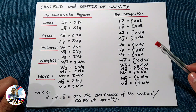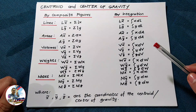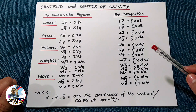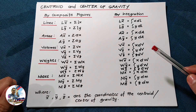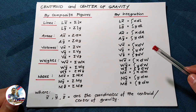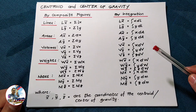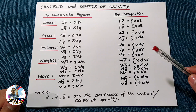Welcome back to my tutorial channel. Today's topic is about centroid and center of gravity. Centroid is the geometric center of a body, while center of gravity is where the total weight, or the resultant weight, of a body passes through.